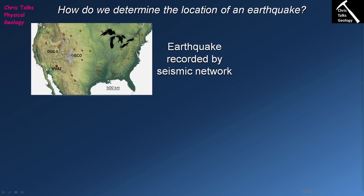On this diagram here you can see an image of the United States with several points marked on its surface. These are seismic stations — locations where there are seismometers that measure the passage of seismic waves through the crust. Three locations have been picked out in particular and given letter codes: DUG, WUAZ, and ISCO. These monitoring stations will be used to work out the location of an earthquake.